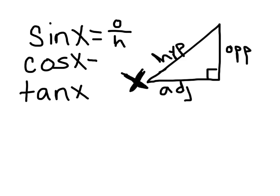The cosine is equal to the adjacent over the hypotenuse. And finally, tangent is equal to opposite over adjacent.